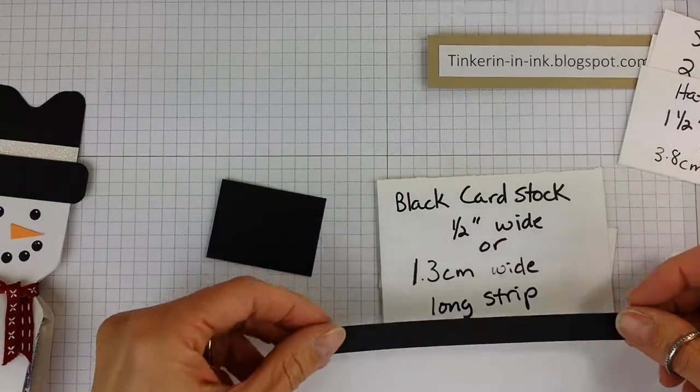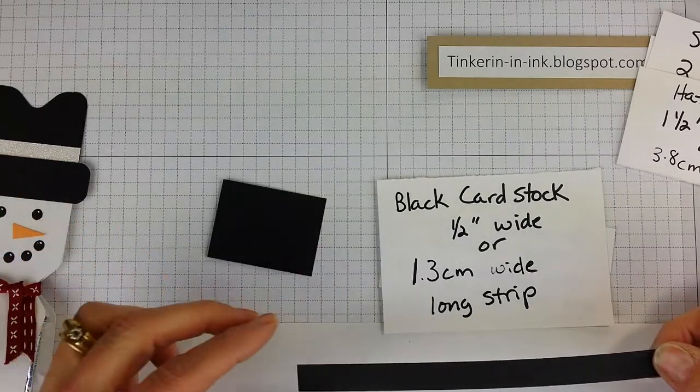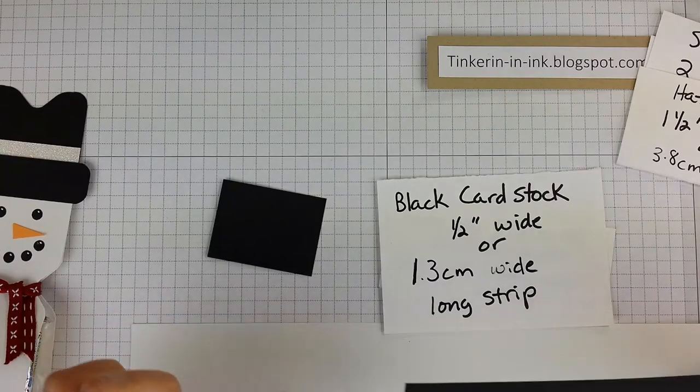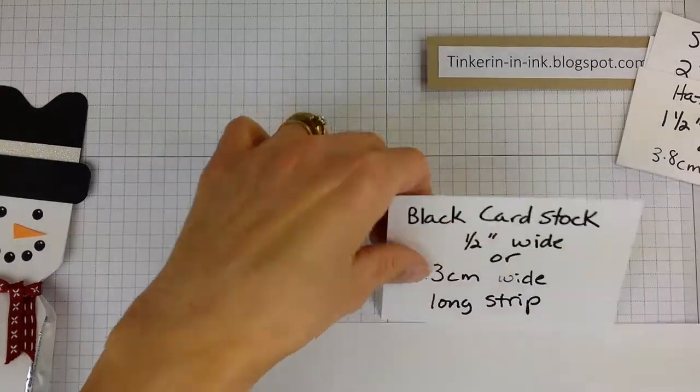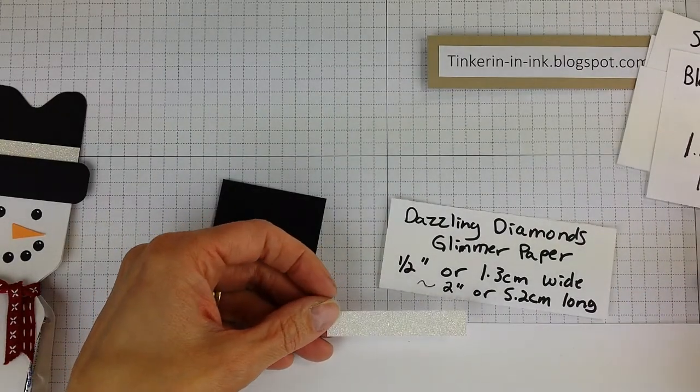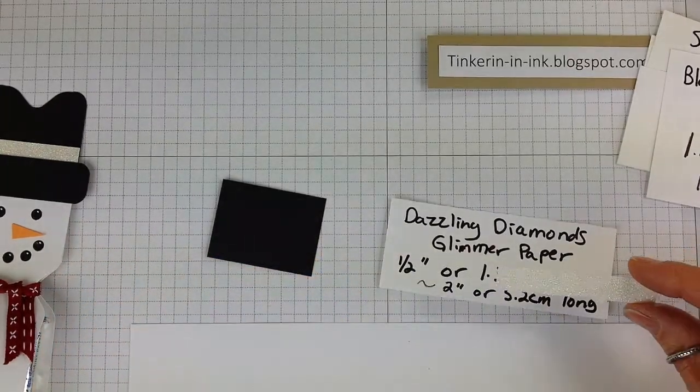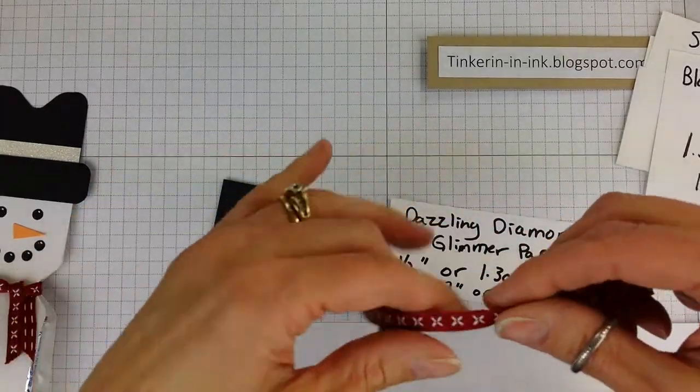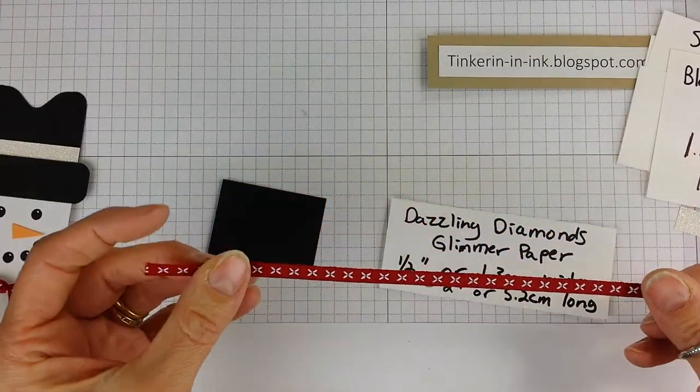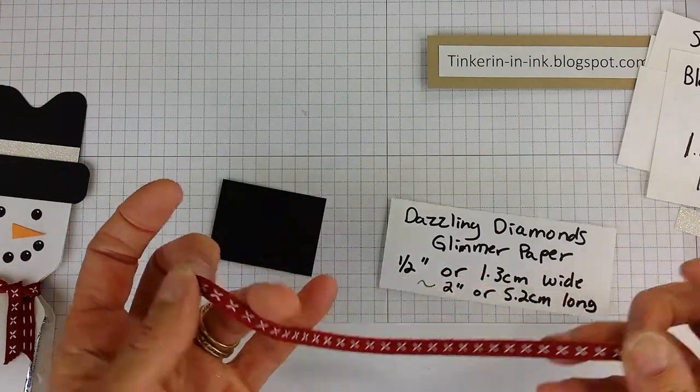And we also need another strip of black paper that is a half inch wide and long. We're going to use a punch to get rounded edges and that is 1.3 centimeters wide. We also need a little strip of glimmer paper that is 1.5 inch or 1.3 centimeters wide and roughly 2 inches long. And this is a piece of Cherry Cobbler ribbon, I think it's 1.4 inch. You can use whatever you like. I like a thinner one and it is about 8.5 inches long.